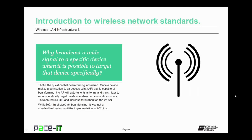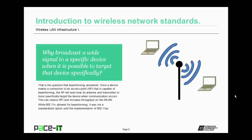Why broadcast a wide signal to a specific device when it's possible to target that device specifically? This is the question that beamforming answered. Once a device makes a connection to an access point that is capable of beamforming, the AP will autotune its antenna and transmitter to more specifically target the device when communication occurs. This can reduce RFI and increase throughput on the wireless local area network. While 802.11n allowed for beamforming, it was not a standardized option until the implementation of 802.11ac.